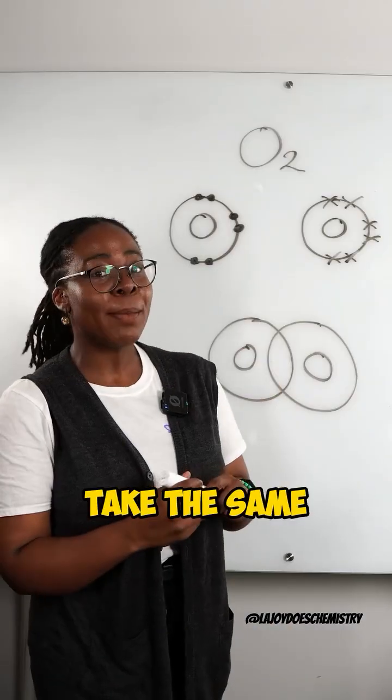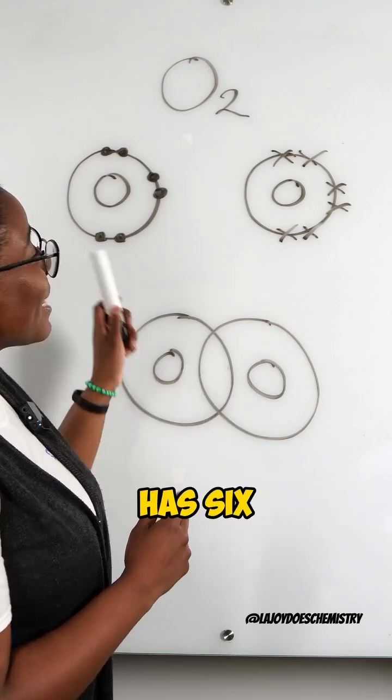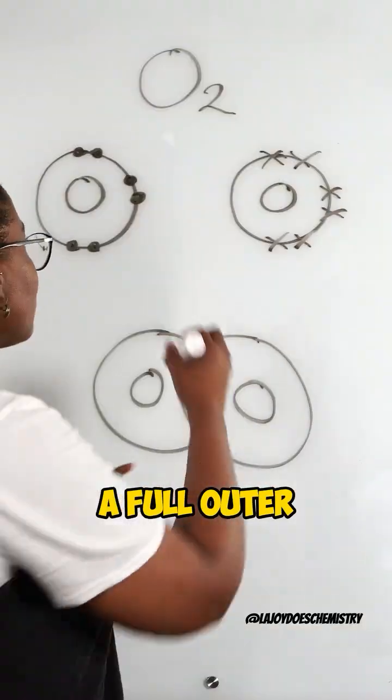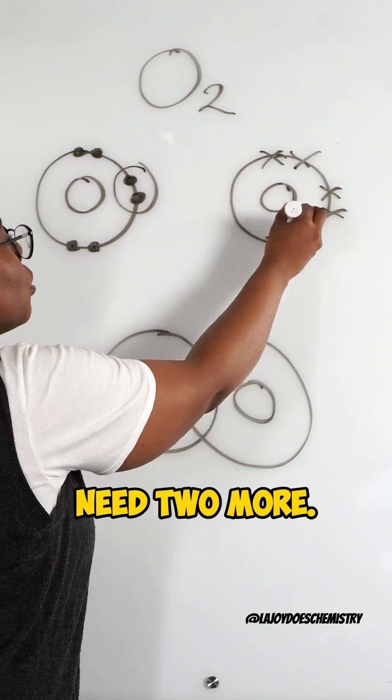For oxygen we'll take the same approach. Each oxygen atom has six electrons in its outer shell, so to get a full outer shell, they each need two more.